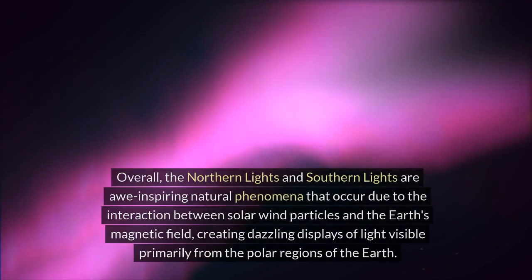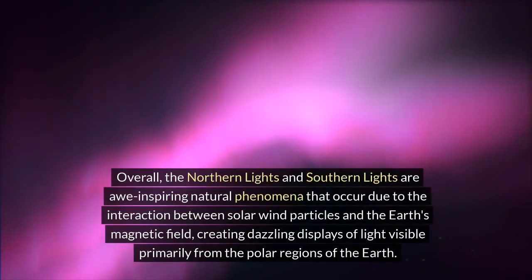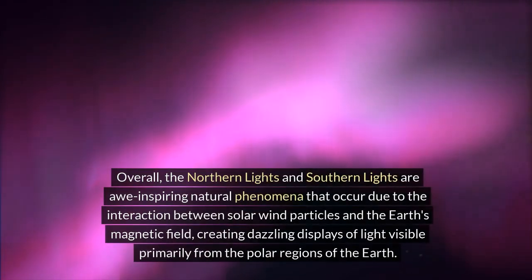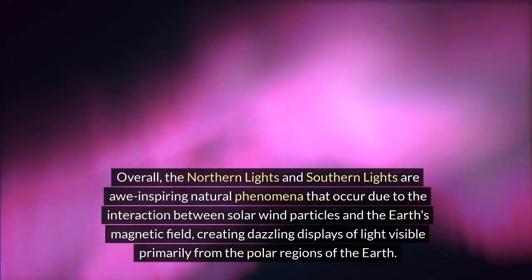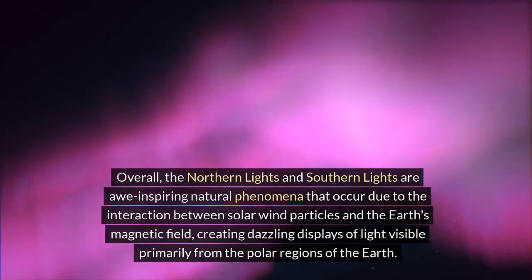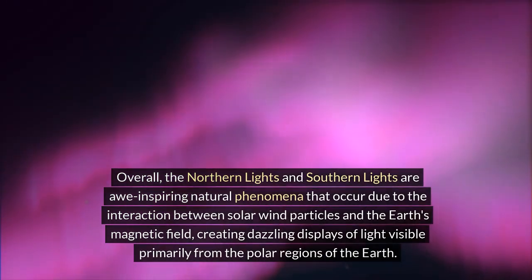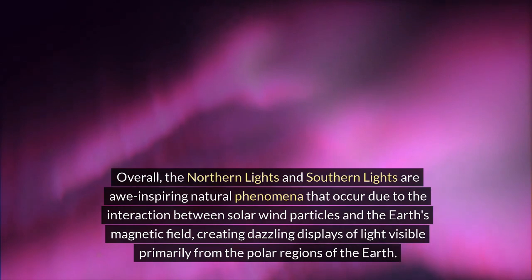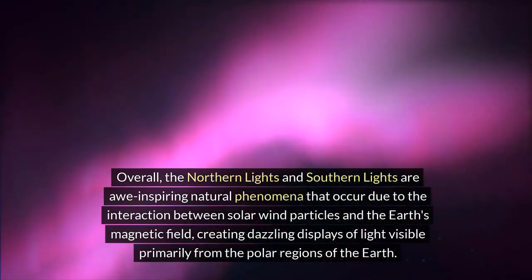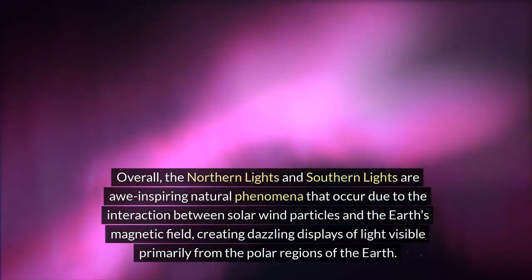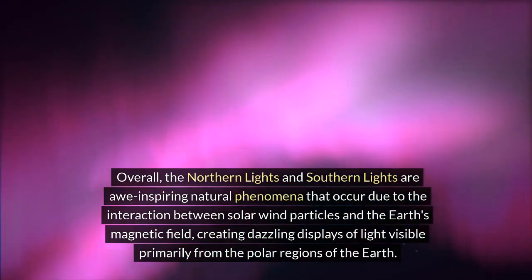Overall, the northern lights and southern lights are awe-inspiring natural phenomena that occur due to the interaction between solar wind particles and the Earth's magnetic field, creating dazzling displays of light visible primarily from the polar regions of the Earth.